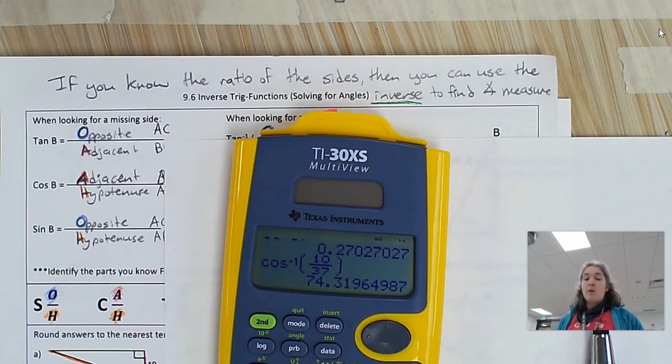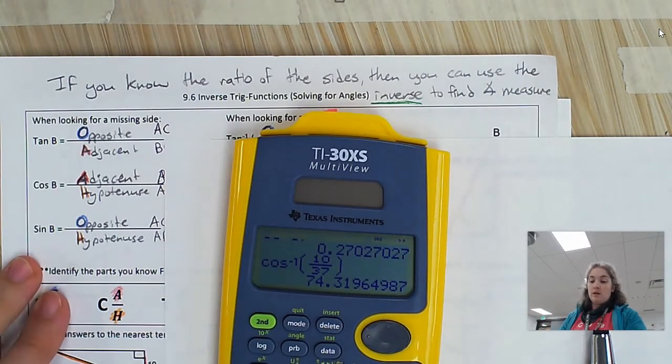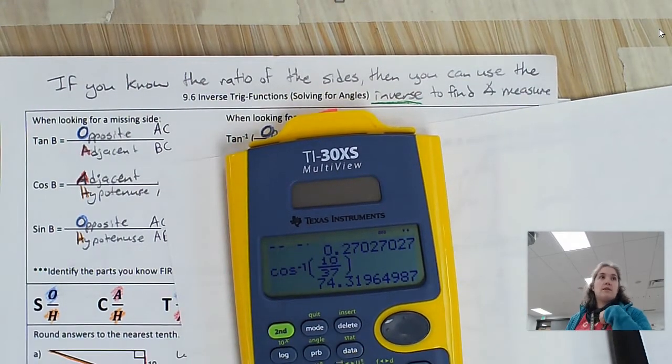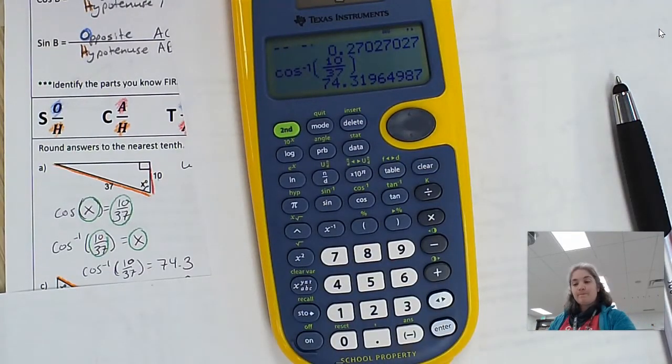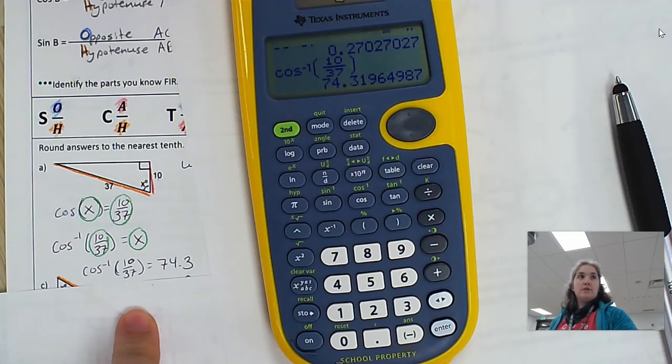Look at that. It's 74.3196. So this just looks it up for you. It just looks it up for you. So you get 74.3 because we're rounding to the nearest 10th. 74.3. So the inverse just flip-flops. The inverse just flip-flops.